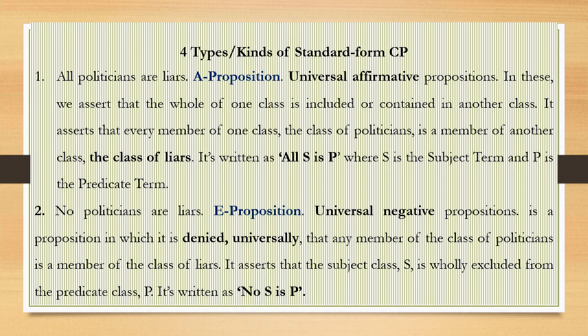Categorical propositions are of four kinds: A, E, I, and O. Number one — 'All politicians are liars' is an A proposition. It is a universal affirmative proposition. It is universal because it talks about the whole class of politicians, and the whole of that class is included in the other class, liars. It is written as 'All S is P,' where S is the subject term and P is the predicate term. Politicians and liars are referred to as terms — subject term or predicate term.